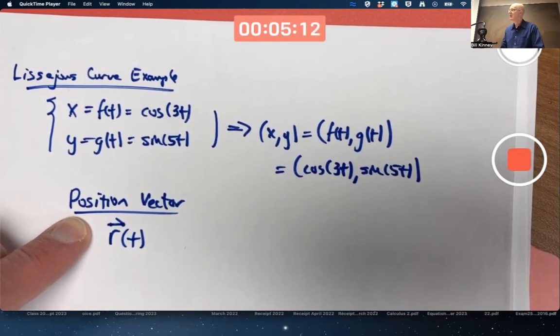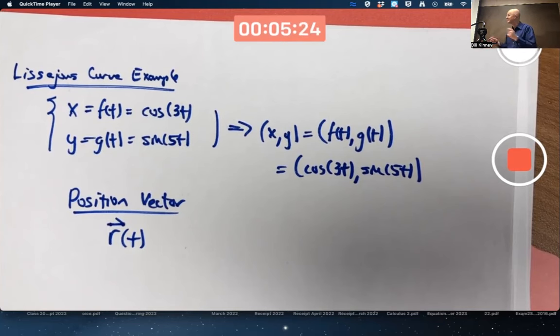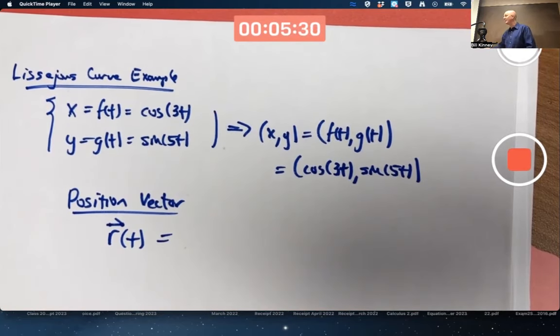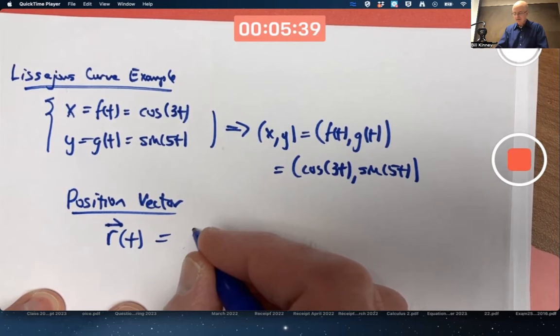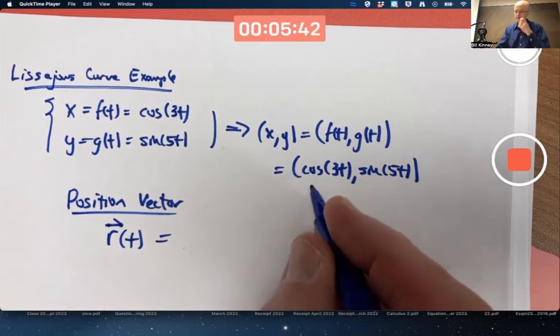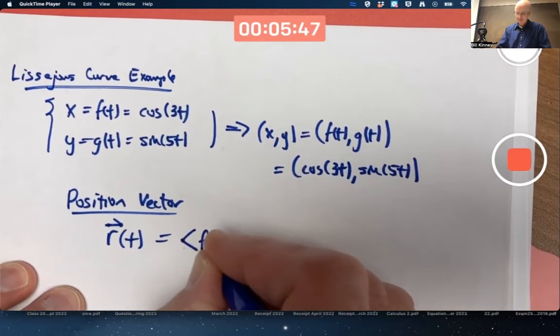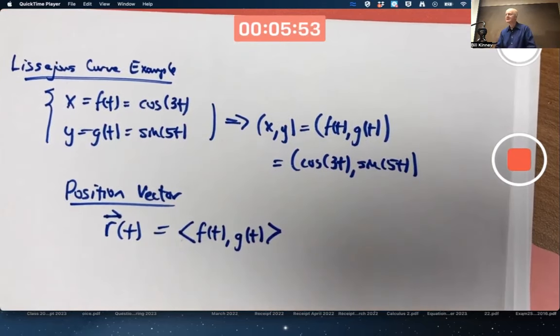But many textbooks don't bother with the arrow and they just make it bold-faced for vectors. Can't really make it bold-faced so well by hand, so we resort to an arrow or half an arrow to indicate that this is a vector quantity that we want to imagine as being an arrow in the plane. But it's a function of t, so it will be a changing arrow, not always the same direction, not always the same length.